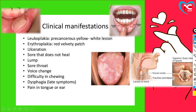Difficulty in chewing — when multiple ulcers appear in the mouth, chewing becomes very difficult. Dysphagia means difficulty in swallowing. When cancer reaches the throat and increases in size, swallowing becomes problematic. If cancer affects the salivary gland area, it can also cause pain in the ear and tongue.